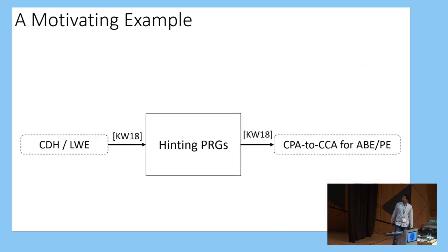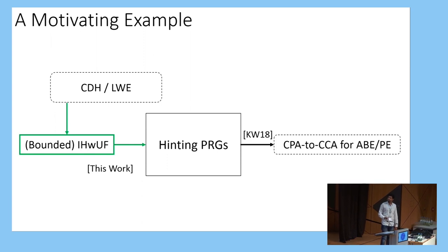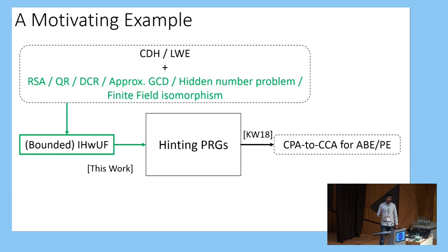As a concrete example, Coppola and Waters proposed a primitive called hinting PRGs, which is known to imply a generic conversion from CPA to CCA security for attribute-based and predicate encryption, with other interesting applications in follow-up works. The authors showed it can be built from CDH and LWE. In this work, we show it can be built generically from a bounded input-homomorphic weak unpredictable function, immediately implying it follows from all these other assumptions. This construction may not be the most efficient, so for efficiency you might still prefer direct constructions — but for feasibility, this is a nice approach. These primitives act as the TCP/IP of cryptography in some sense.